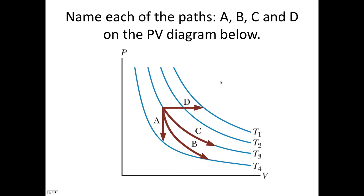Now here's something for you to try. Name each of the paths A, B, C, and D on the PV diagram below. One of them is adiabatic, one is isovolumetric, one is isobaric, and one is isothermal.